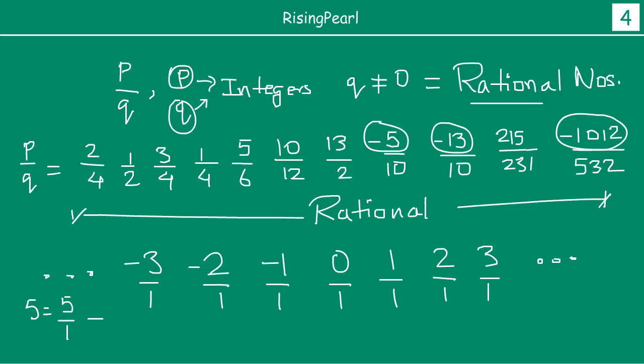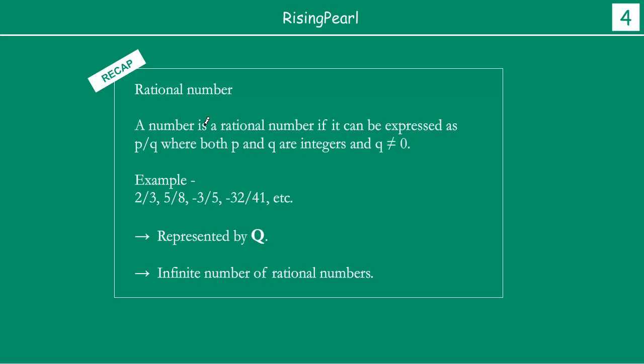So let's do a quick recap. Rational numbers we have seen is a number, a number is called rational number if we can express that in the form P by Q, where both P and Q are integers. P and Q can be any integer, and Q should never be equal to 0. These are some examples, and we represent this by upper case letter Q. And we saw there are infinite number of rational numbers.